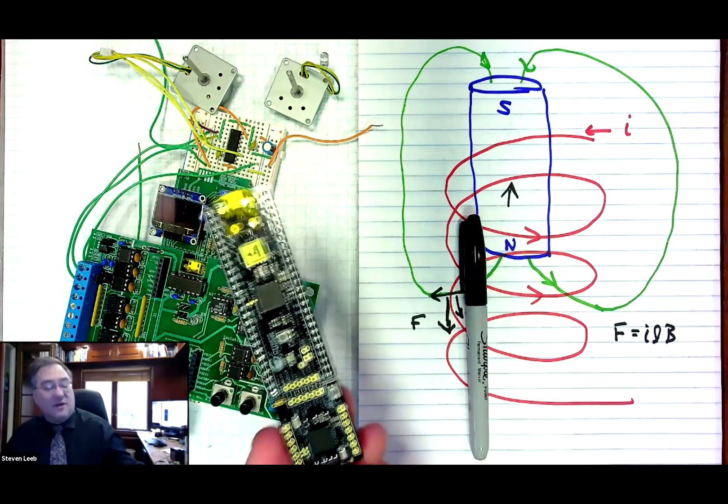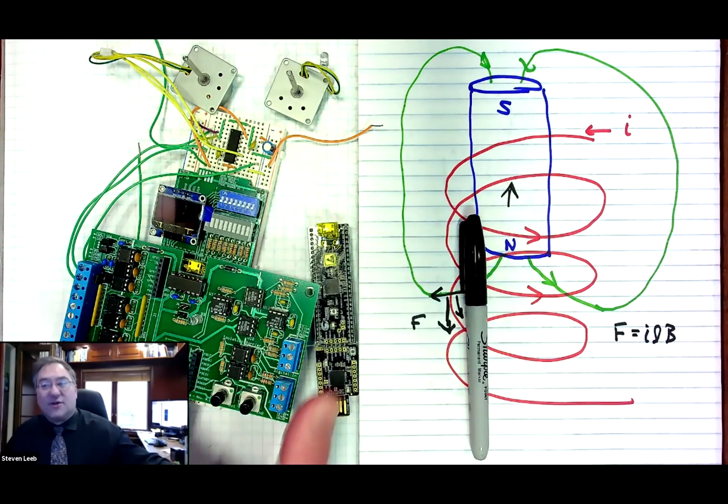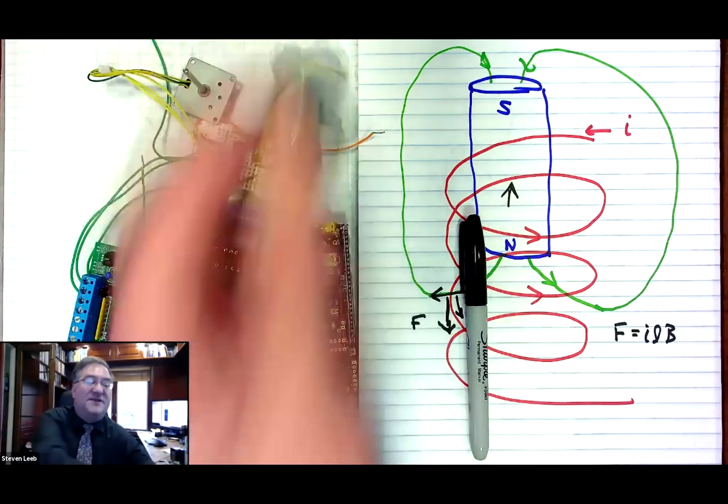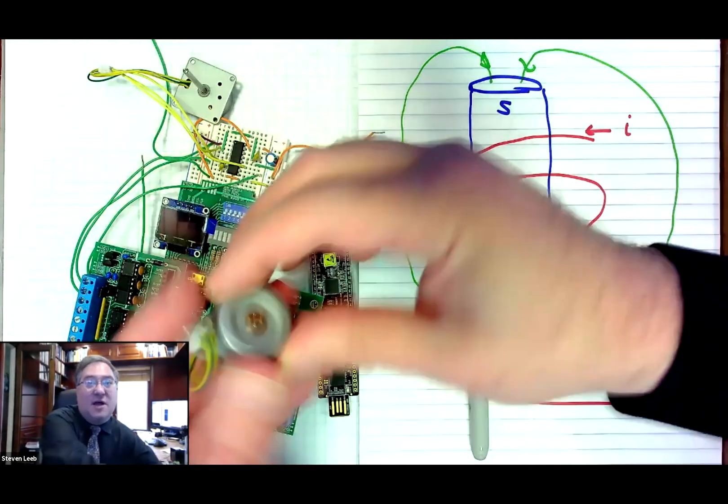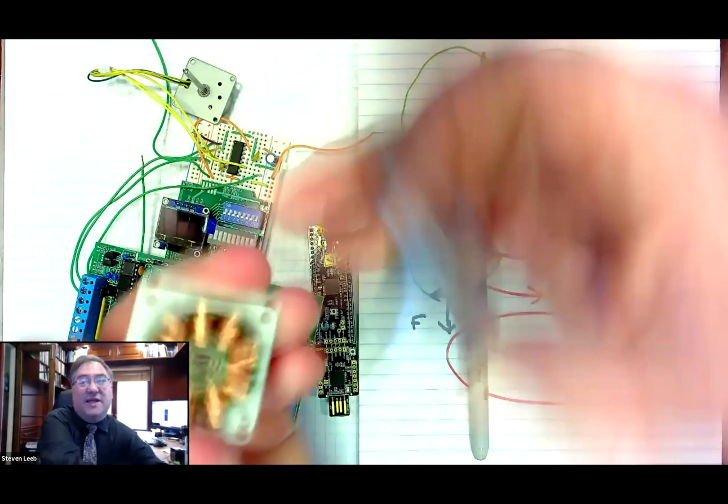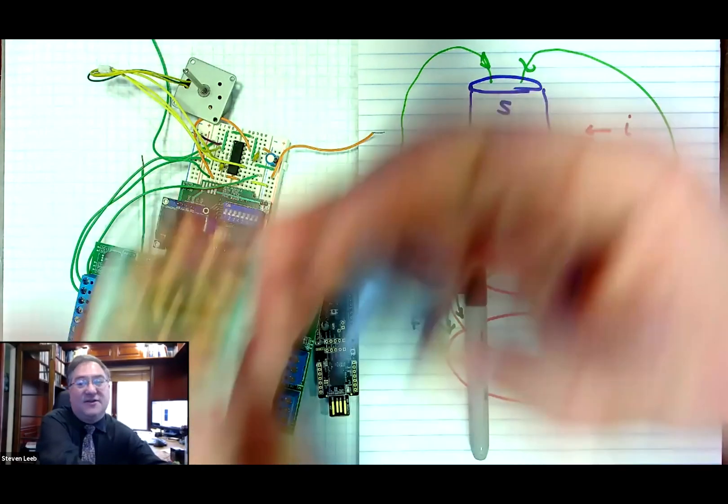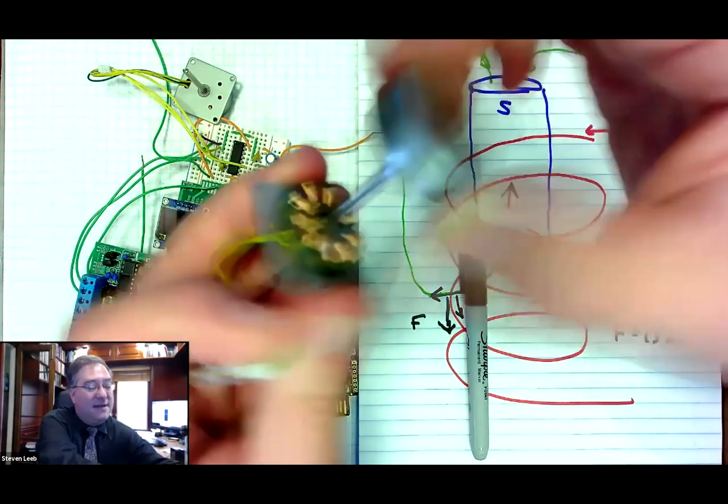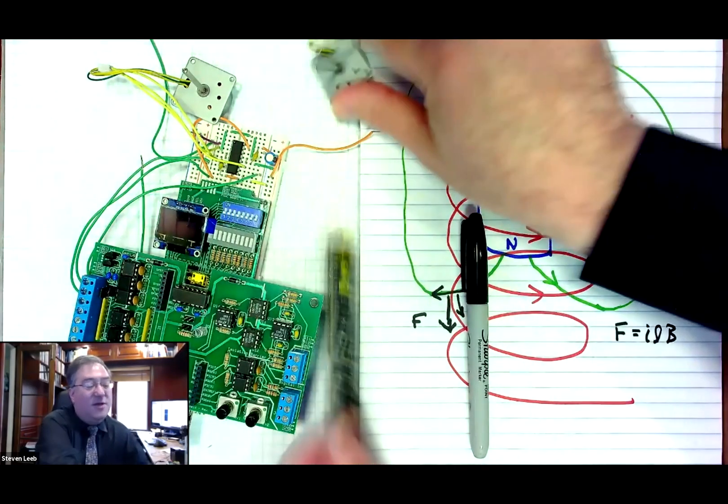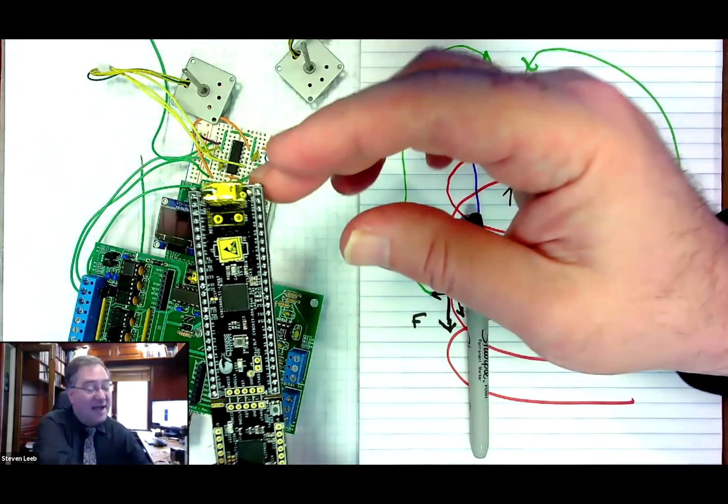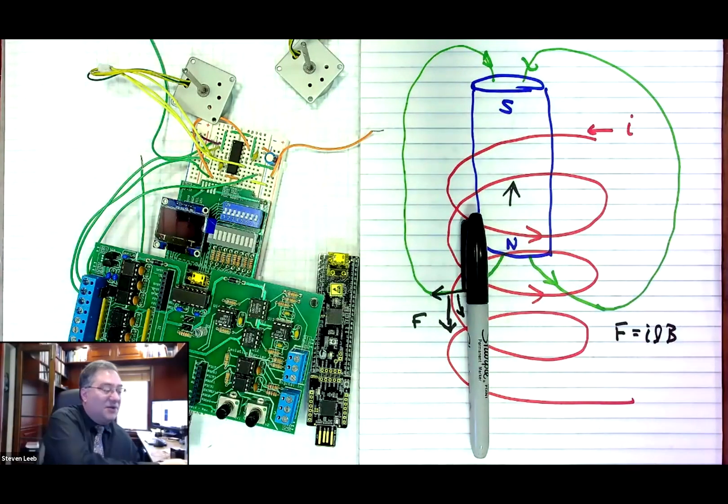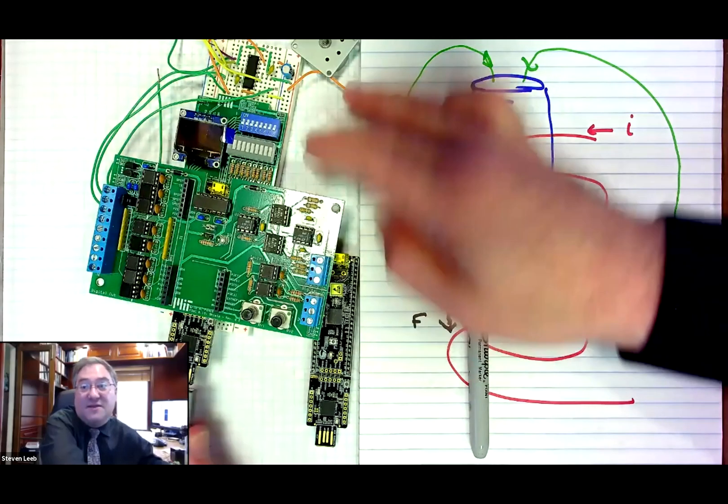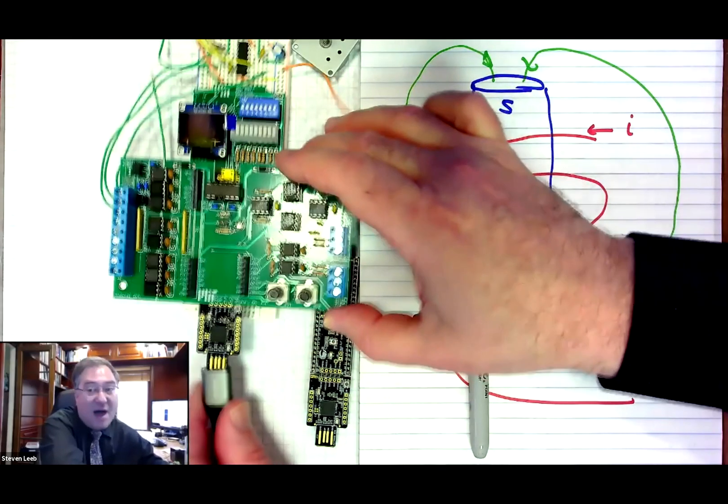So you're going to see a microcontroller like this one. That microcontroller, we won't be sending you quite this much junk. This is just my demo, but we will be sending you a small motor like this one. So you'll be able to look inside, see the windings, and understand how that works. And then we'll be connecting that up to a circuit that you will build, for example, in the middle day of the class on Wednesday, and then be able to create something like this.